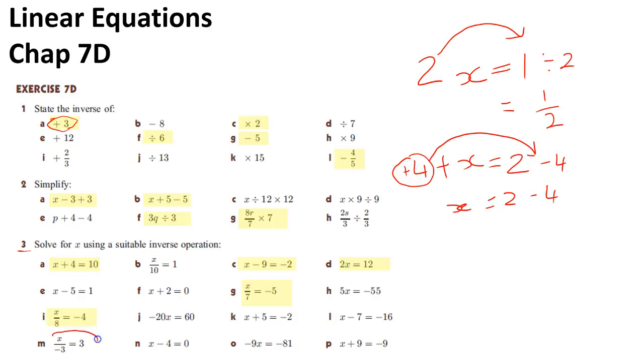I've got x over minus 3 equals 3. I want the x to be by itself, and I've got minus 3. So here, the minus 3 is divided by x, so to move it back up here onto the other side, I need to times by minus 3. So remember, the sign doesn't change, because it's all of this that I'm moving.